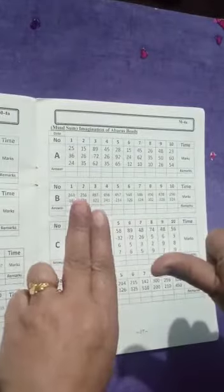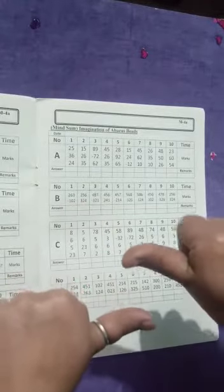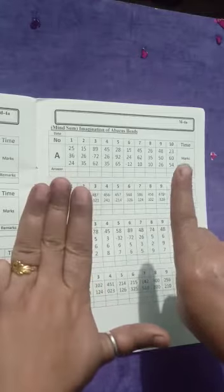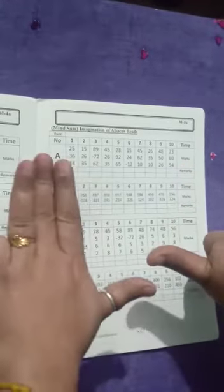Question number 1 is 25, add 30, add 6, minus 5, add 11, add 20, add 4. Answer will be 85.